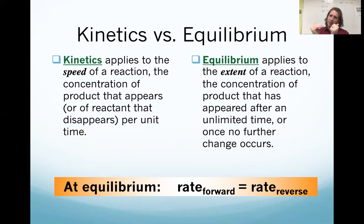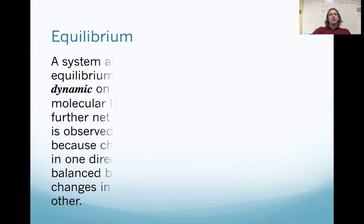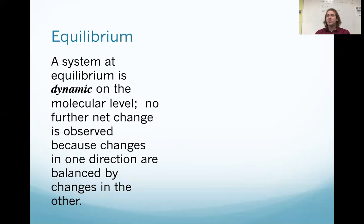So given this, given that we're saying at equilibrium our rates are equal, we can start to do a little bit of calculating, a little bit of math. A system at equilibrium is dynamic on the molecular level. We don't see any big macroscopic changes anymore, but that's because they're being balanced in either direction. The change, and here's the key, the change is still happening. It's just opposite and equal.